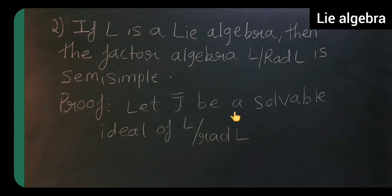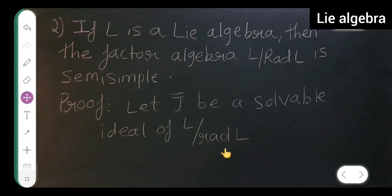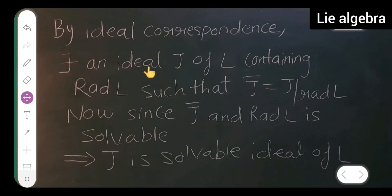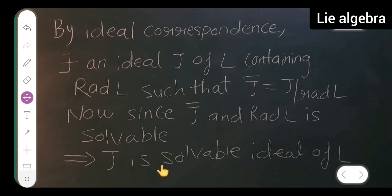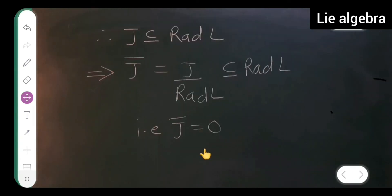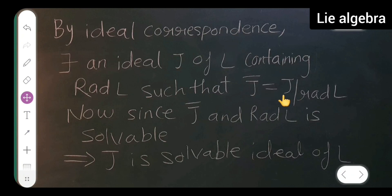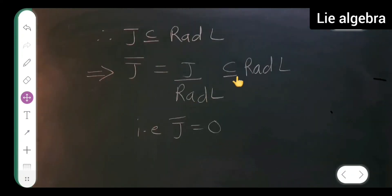The proof: let j-bar be a solvable ideal of l by rad(l). By the ideal correspondence theorem, there exists an ideal j of l containing rad(l) such that j-bar = j / rad(l). Since j and rad(l) are both solvable, j is a solvable ideal of l. Therefore j is a subset of rad(l), which implies j-bar = j / rad(l) is a subset of rad(l) / rad(l) = 0. So j-bar = 0.